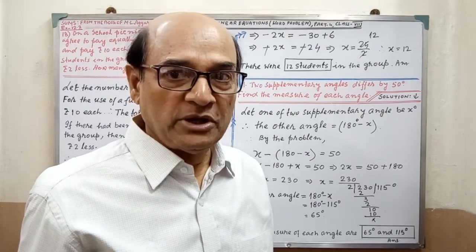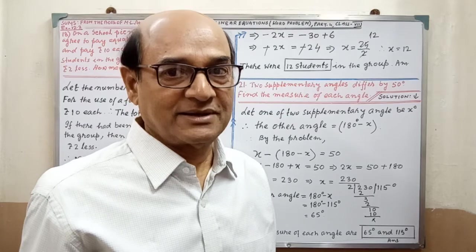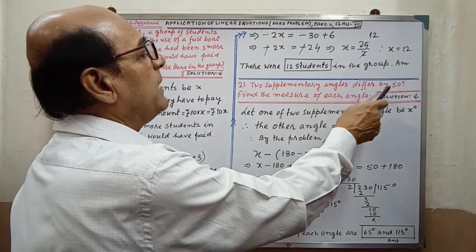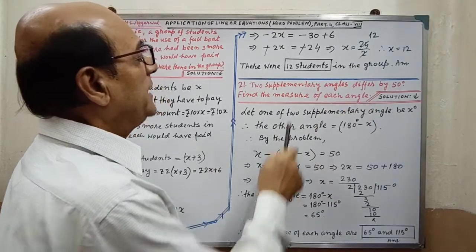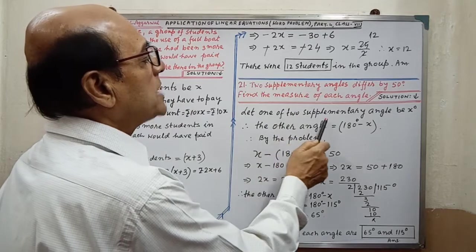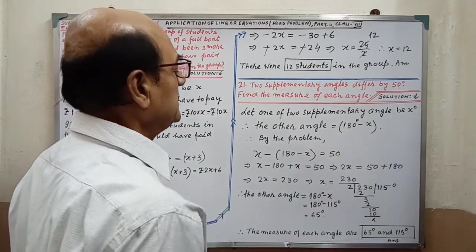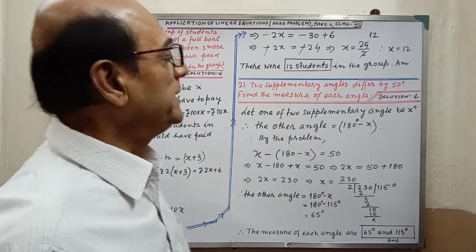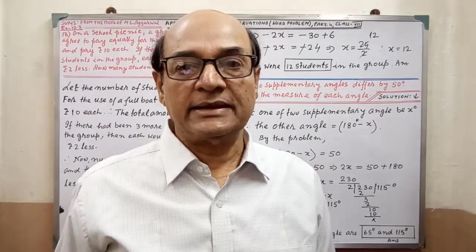Formation of the equation, you have to understand clearly. Next sum. Two supplementary angles differ by 50 degrees. Find the measure of each angle. Let one of two supplementary angles be x degrees. Therefore, the other angle equal to 180 degrees minus x degrees.